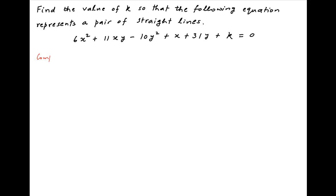We start by comparing the given equation with the general equation of the conic: ax² + 2hxy + by² + 2gx + 2fy + c = 0.